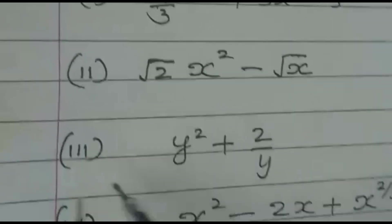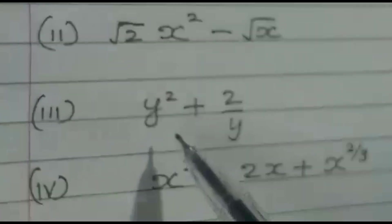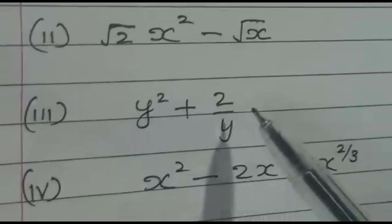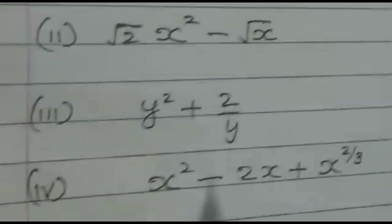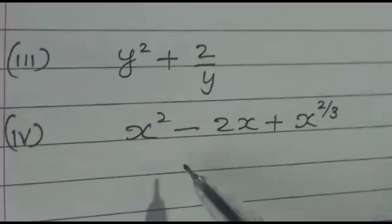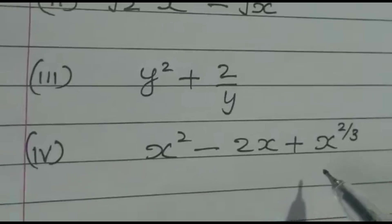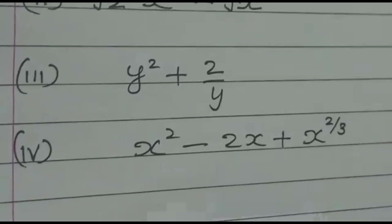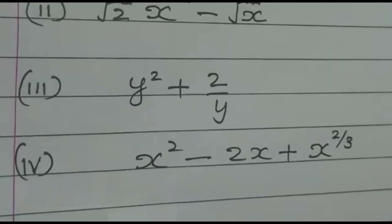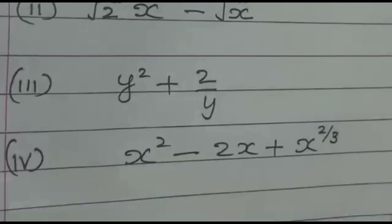The expressions to identify are: first, (4/3)x² + 3x - 5; second, √2·x² - √x; third, y² + 2/y; and fourth, x² - 2x + 2/3. The answers will be provided in the next edition.